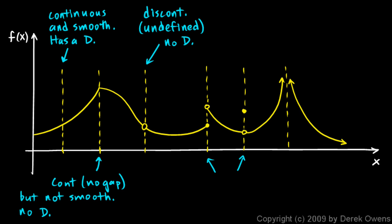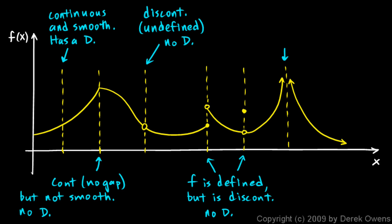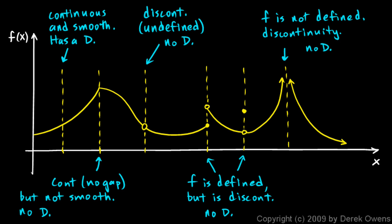At both of these points, the function is defined — there is a y value — but at both of those points it is discontinuous, so there's no derivative at those points. And right here we have a vertical asymptote. The function is not defined at that point, and specifically it's not continuous — this is an infinite discontinuity — so there's no derivative at that point either.